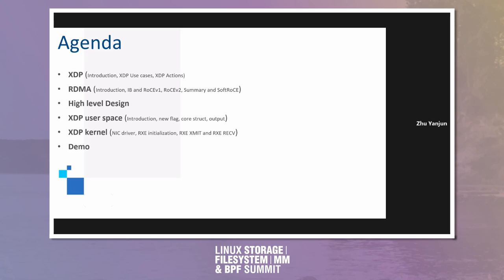This is the agenda for today. The first topic is about XDP, including XDP introduction, XDP use case, and XDP action. The second is RDMA, including RDMA introduction, InfiniBand, RoCE version 1, RoCE version 2, RDMA summary, and SoftRoCE. The third is high-level design about XDP with RDMA, including introduction, new flag, call structure, and output format. The fifth is XDP kernel implementation, including NIC driver, SoftRoCE, XDP initialization, XDP send path, and receive path. The final section is our demo.